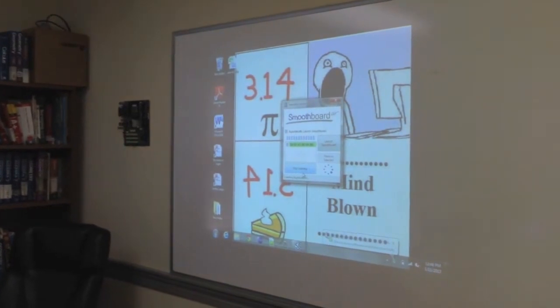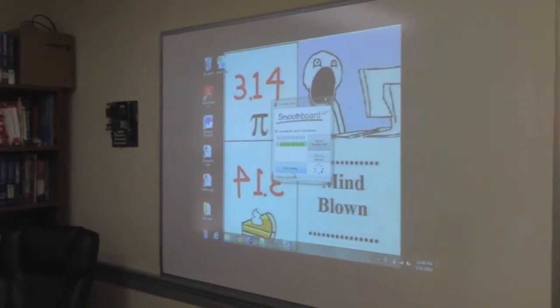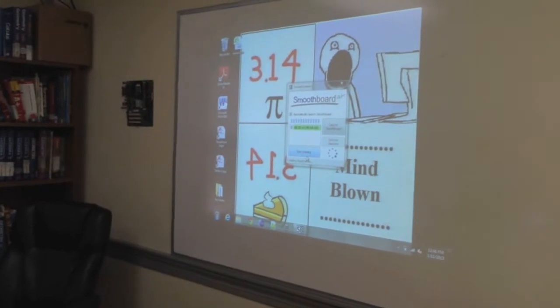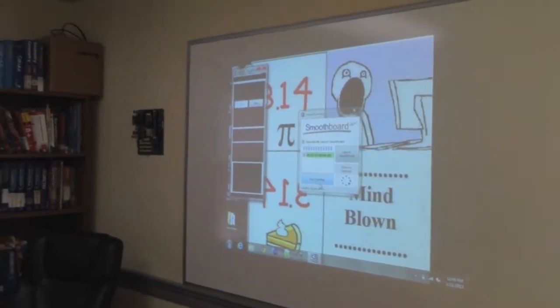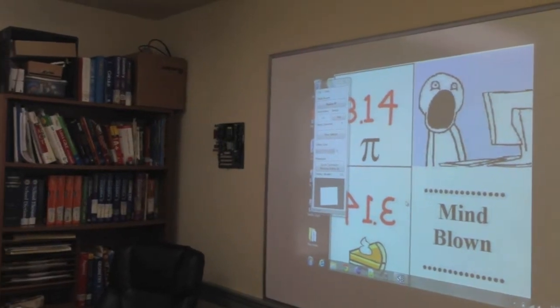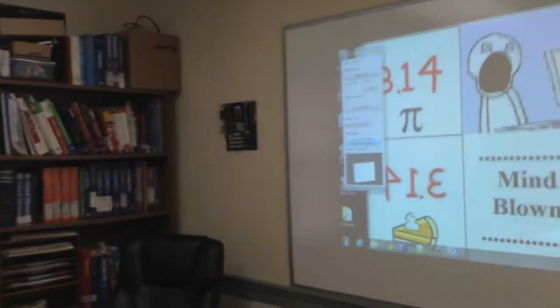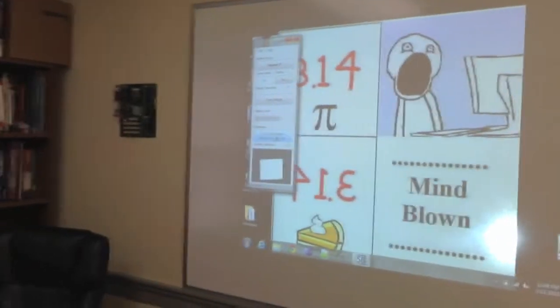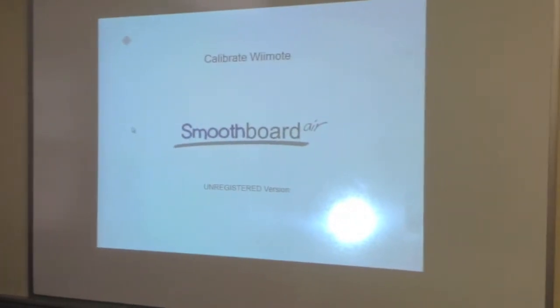So that initial thing, the Wii remote has to be on. I hold down those buttons and then it calibrates. So then I go to here, quick calibration. I click on this with the mouse.